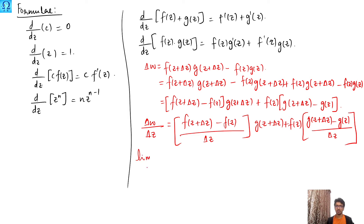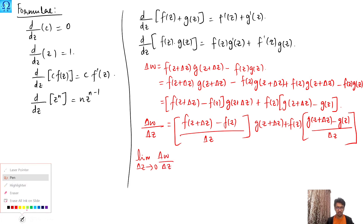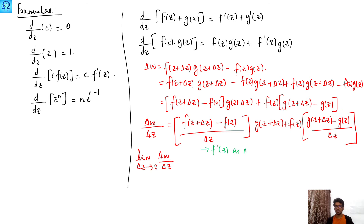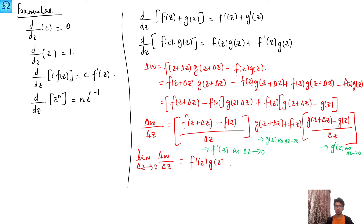Now taking the limit as Δz approaches zero, by the definition of a derivative the first difference quotient becomes f′(z). By the continuity of g, g(z + Δz) approaches g(z) as Δz → 0, and the second difference quotient goes to g′(z). So finally we get f′(z)·g(z) + f(z)·g′(z), which is exactly what we expected.